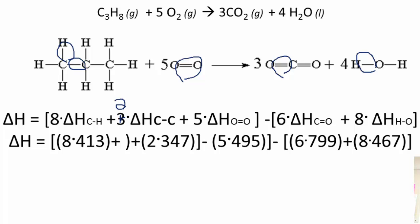So you insert all the numbers. So it's eight times the 413, two times the 347, five times the 495. So all these are the bonds that are broken, so we're putting energy in. These are the bonds that are formed. This is an exothermic process. That's why these are negative. And when you do all the math, you get negative 2,057 kilojoules per mole.